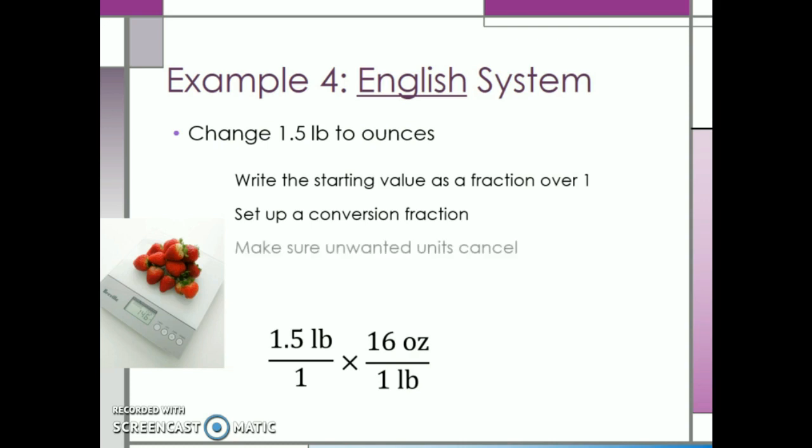Next, we need to make sure unwanted units cancel. Pounds divided by pounds just equals one, so those units cancel, and we are left with units of ounces, which is what we are looking for. Last, we need to multiply and simplify. Multiplying across, one and a half times 16 ounces equals 24 ounces, and we are done.